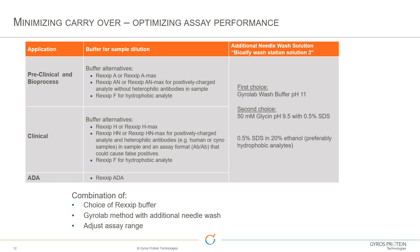One other thing to consider in addition to choosing the right buffer and second wash solution: you may want to think about adjusting the assay range. If you're hitting the system with huge levels of analyte that aren't providing any analytical benefit, you may be contaminating your instrument unnecessarily.